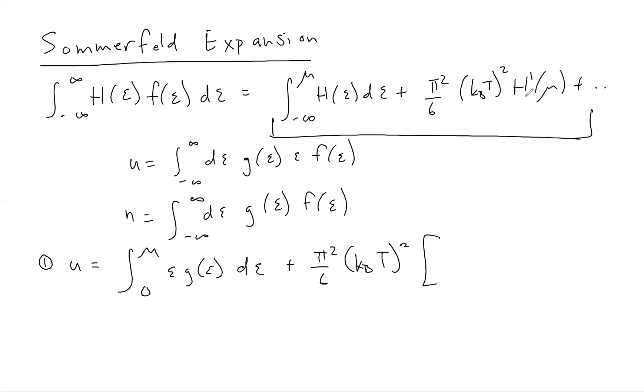Remember the density of states is zero for negative energies, so I'm free to change the limits from minus infinity to zero. Now let me include the next term in the Sommerfeld expansion. We have to compute H prime at mu - H is G times E. Our equation for the density looks like this, and in this case H prime of mu is just G prime of mu.